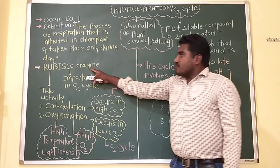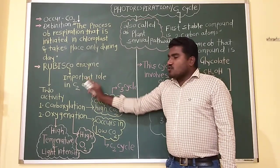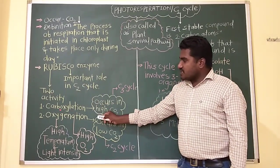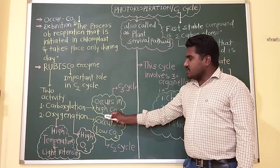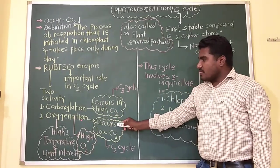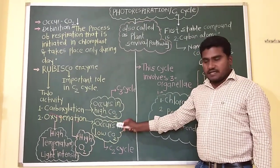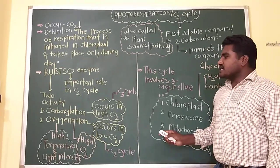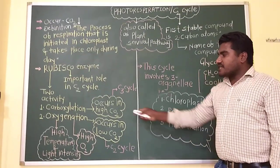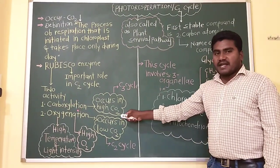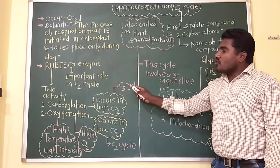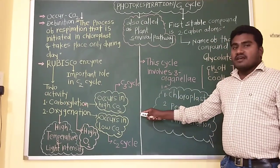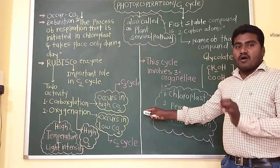The rubisco enzyme performs two activities: first, carboxylation, and second, oxygenation. Carboxylation means the addition of carbon dioxide — rubisco enzyme performs this carboxylation activity in the C3 cycle.